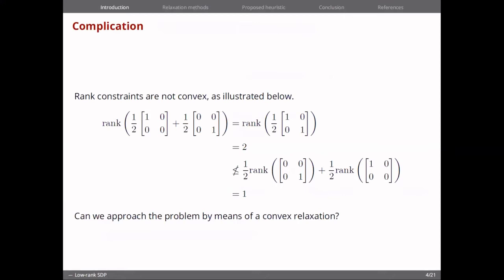The complication of adding these sort of constraints is that rank constraints are not convex, which is easy to see in this 2x2 example, where we have two rank 1 matrices, but a convex combination of these matrices has rank 2. And then what we ask ourselves when we see this is, can we approach this problem by means of a convex relaxation?